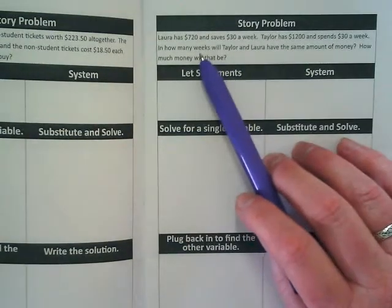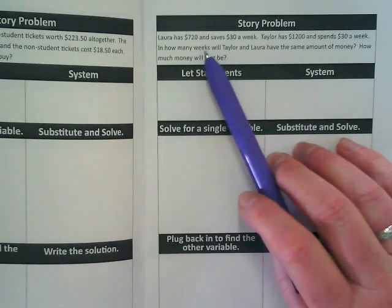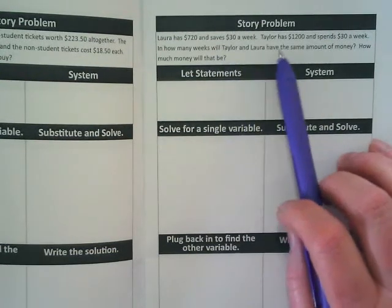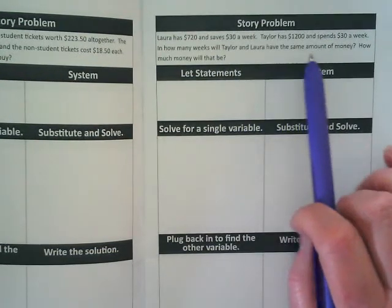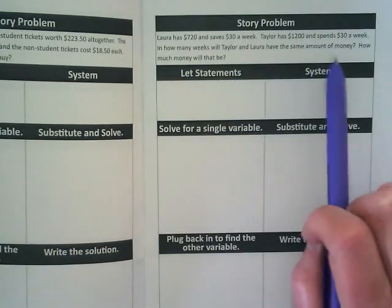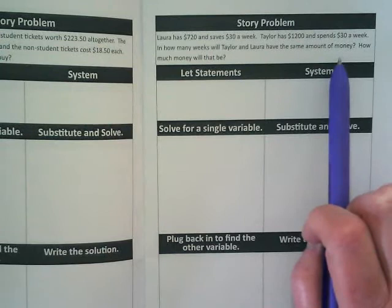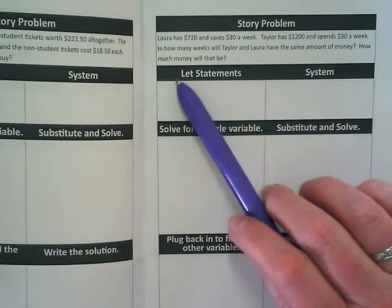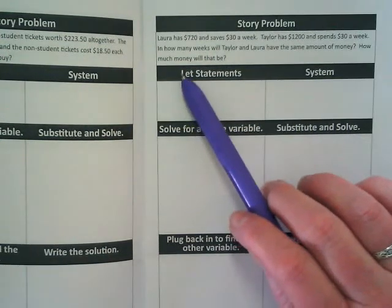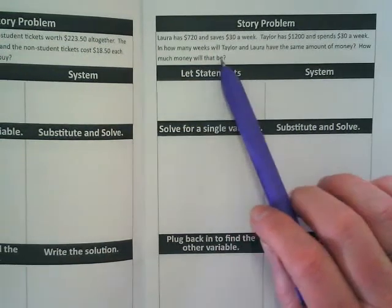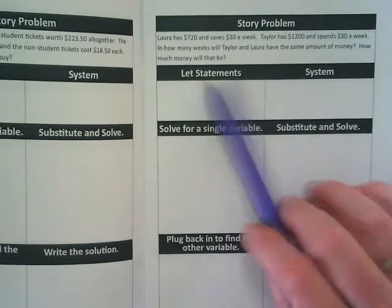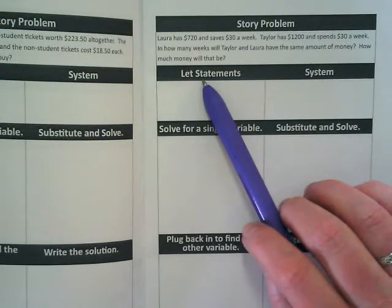Laura has $720 and saves $30 a week. Taylor has $1,200 and spends $30 a week. In how many weeks will Taylor and Laura have the same amount of money? How much money will that be?